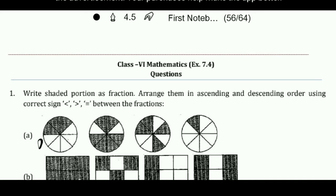Next, exercise 7.4. Write the shaded portion as a fraction. Arrange them in ascending and descending order using the correct sign between the fractions. All the totals are 8, which means these are like fractions. Counting the shaded parts: first figure has 3 shaded — 3 by 8; second has 6 shaded — 6 by 8; third has 4 shaded — 4 by 8; and the last has 1 shaded — 1 by 8.